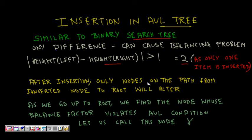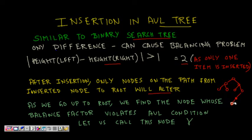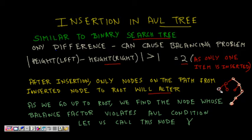After insertion, only nodes on the path from the inserted node to the root will get altered. If there is a binary tree and some insertion happened at a leaf, then only the balance factor of nodes along that path from the inserted node to the root will get disturbed, because the insertion only affects those nodes.